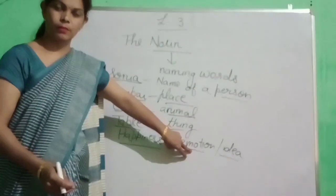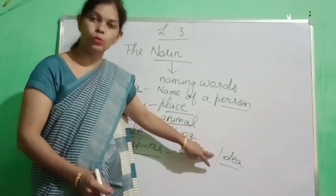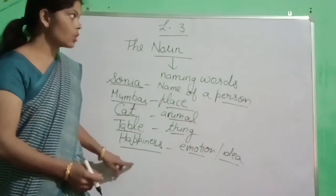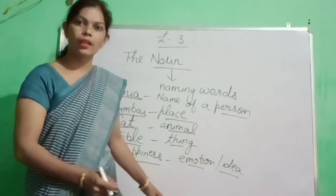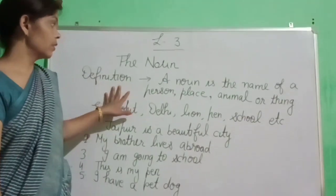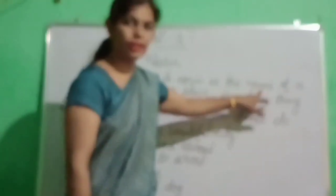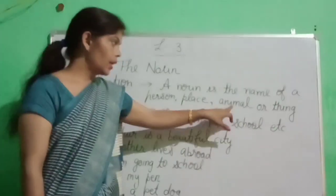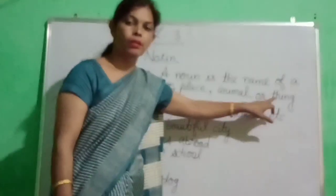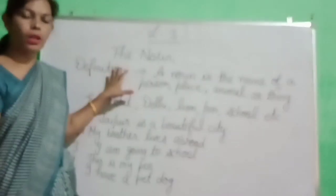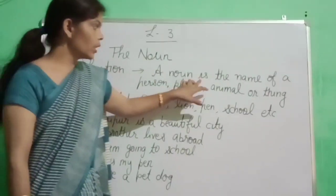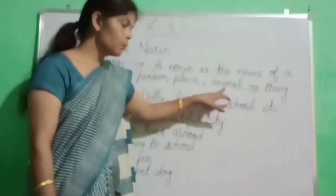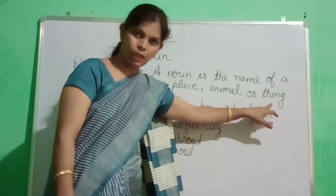What are these? These are noun. So dear students, definition of noun is: a noun is the name of a person, place, animal or thing. What is the definition of noun? A noun is the name of a person, place, animal or thing. Clear?